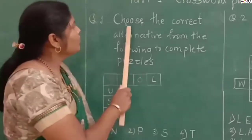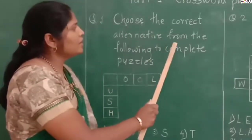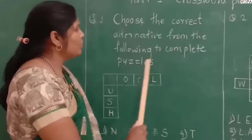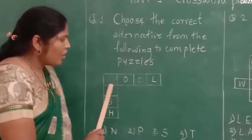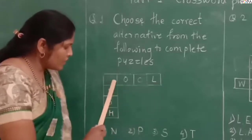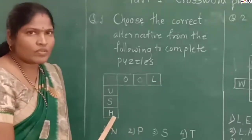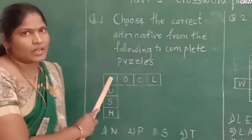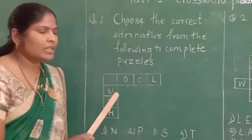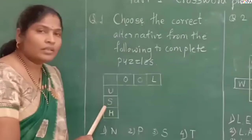Here we have the first question. Choose the correct alternative from the following to complete puzzles. Here we see horizontal boxes and vertical boxes with a blank box. In our scholarship section, we have the same figure.